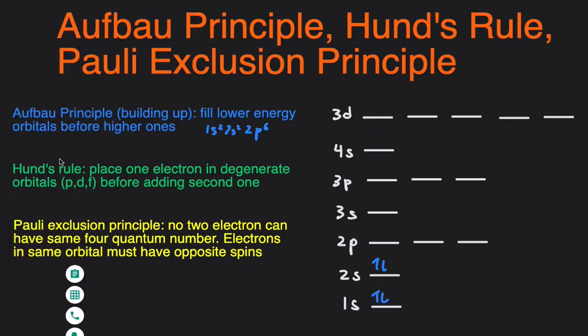All right, next, Hund's Rule. Hund's Rule states that you have to place one electron in each degenerate orbital before adding a second one. So degenerate orbitals just means orbitals that have the same energy, and those are the p's, the d's, and the f orbitals.